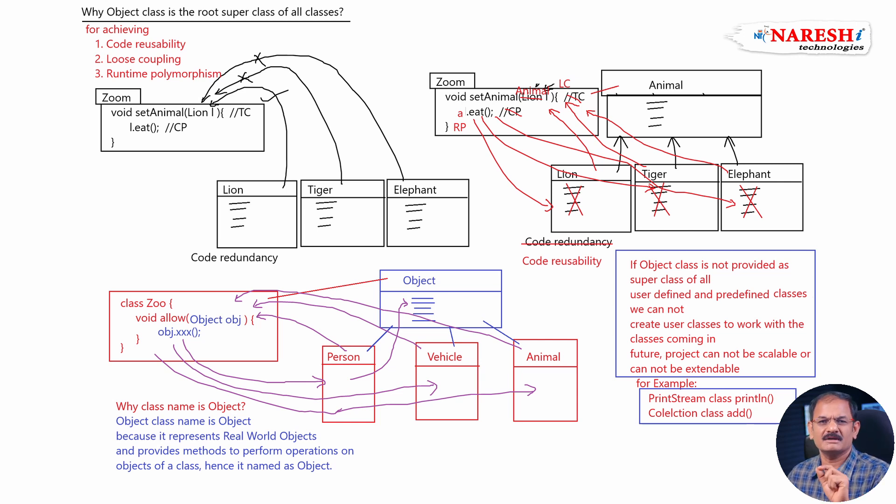As per coding standards and naming conventions we follow one point: the name of the class must represent the operation performed by this class. The java.lang.object class is given for representing real world objects and also meant for providing methods to perform operations on instance of a class. Instance of a class is object. That is why the class name is object.